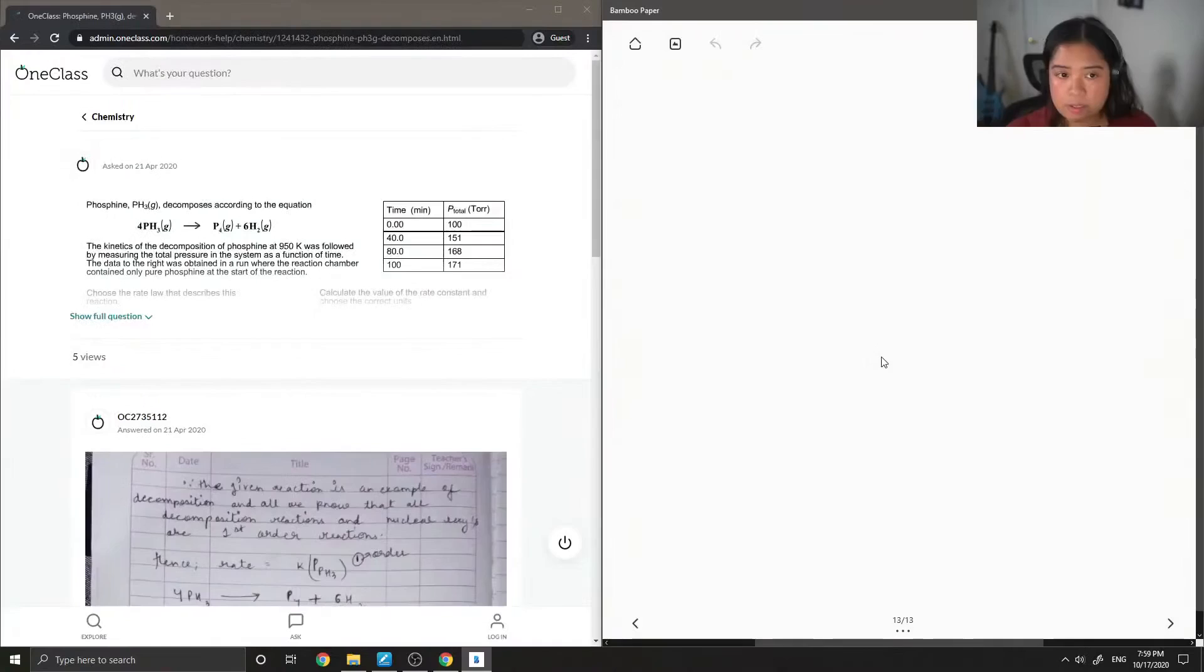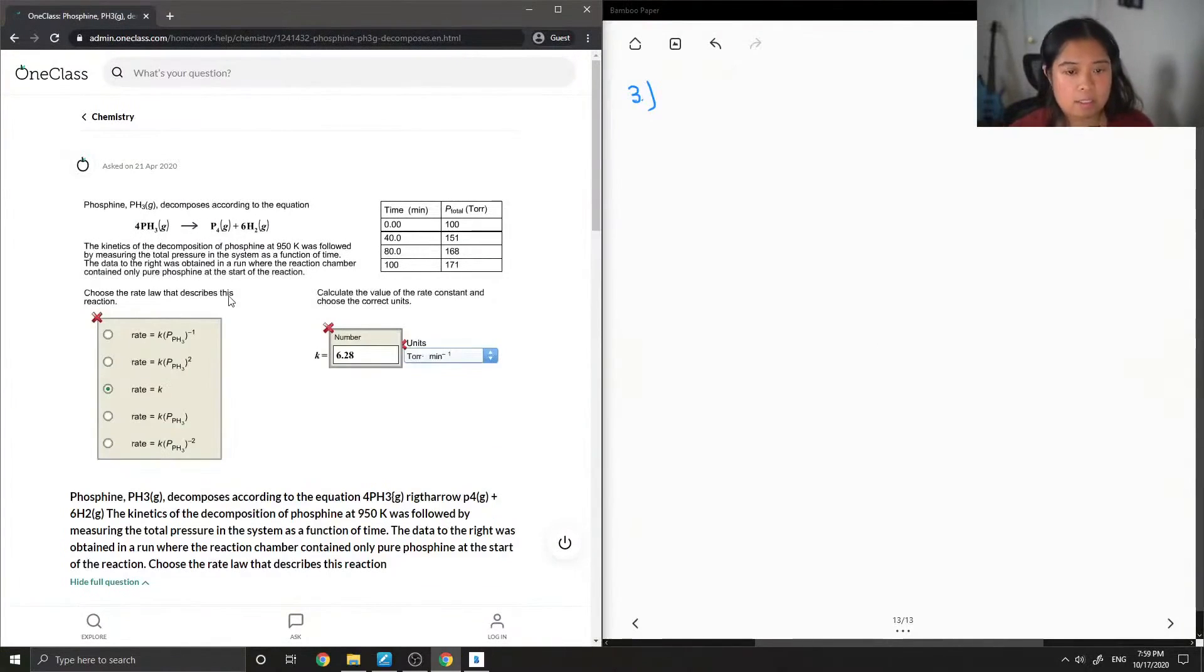Okay, so let's go to question 3. Phosphine PH3 gas decomposes according to the equation. The kinetics of the decomposition of phosphine at 950K was followed by measuring the total pressure in the system as a function of time. The data to the right was obtained in a run where the reaction chamber contained only pure phosphine at the start of the reaction. Choose the rate law that describes this reaction and then calculate the value of the rate constant and choose the correct units.